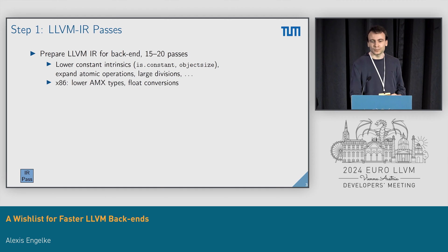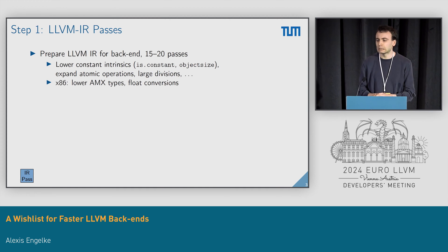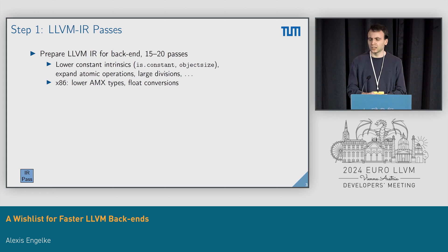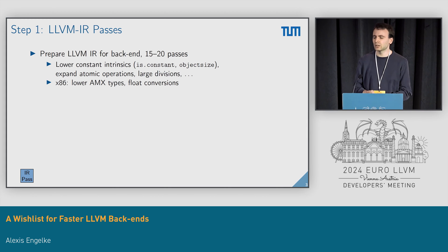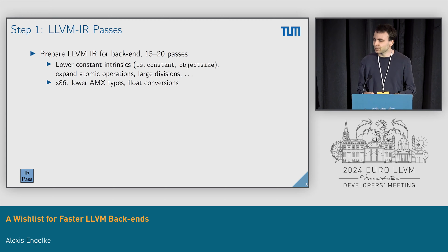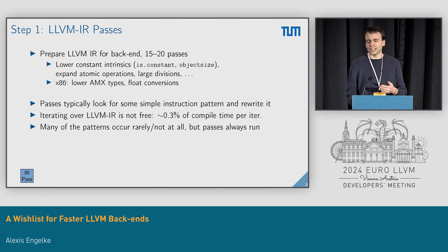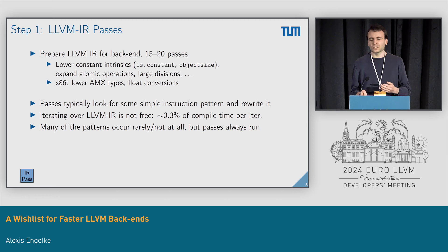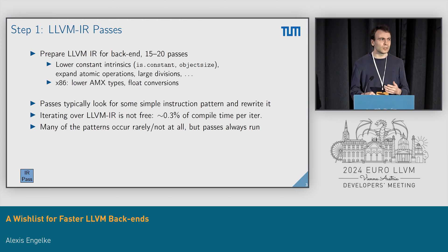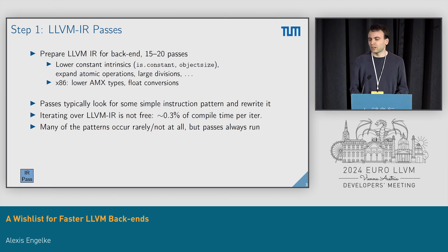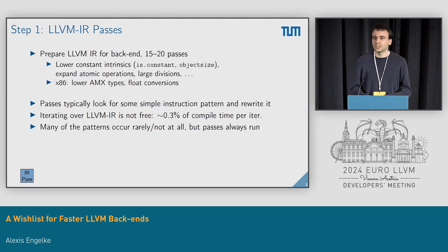The first step of the LLVM backend pipeline is some passes on LLVM IR — typically 15 to 20 passes depending on the target architecture. For example, they lower constant intrinsics to actual constants, expand atomic operations not supported by the target, or expand large divisions. On x86, it also handles lowering AMX types, which 99% of programs don't use, or some scalar floating point conversions. What all these passes have in common is they look for simple IR patterns and rewrite them. A single iteration of LLVM IR takes about 0.3% of backend compile time, and many of these patterns occur very rarely — or in our case, we know we'd never generate them. Yet the passes always run and we always pay this tax.